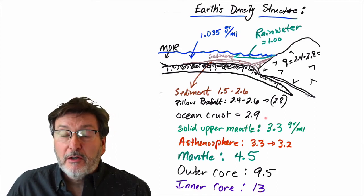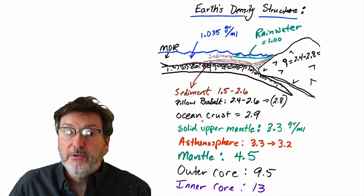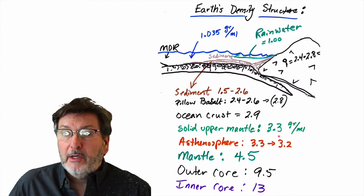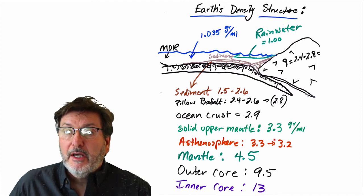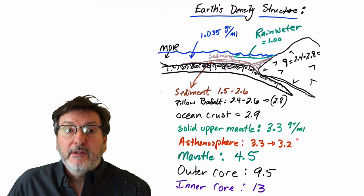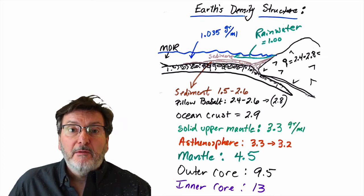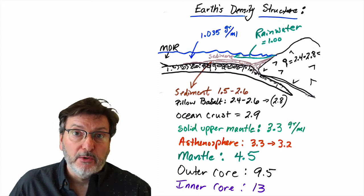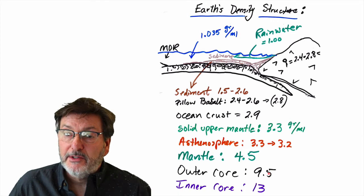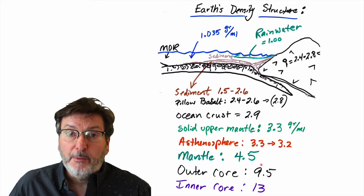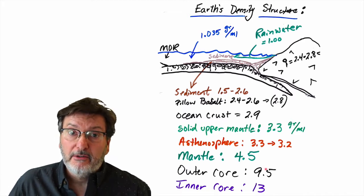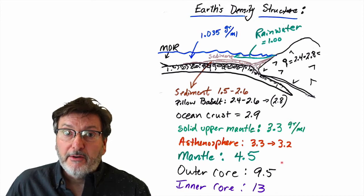Ocean crust in general — because the lower part is crystalline mafic rock or gabbro — has an overall density of 2.9. Then we drop down through a big compositional change to the upper mantle, where the solid part has a density of 3.3 grams per milliliter. The partially molten asthenosphere has a density of 3.2 to 3.3, about 10% lighter than solid mantle. The overall mantle is 4.5, the outer core is 9.5, and the inner core is 13 grams per milliliter — there's a lot of mass in the core.